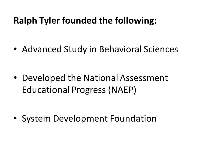Ralph Tyler founded the Center for Advanced Study in Behavioral Sciences in 1954. He founded and directed this facility through 1967. The center was originally envisioned as a five-year project but later became an ongoing independent institution, eventually supporting over two thousand leading scientists and scholars. As a member of the governing board, Tyler is credited with playing a critical role in shaping the center as a new type of educational institution.